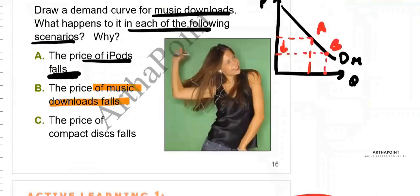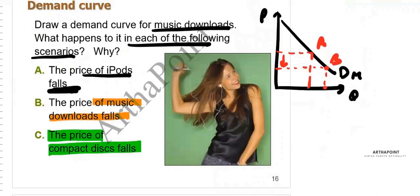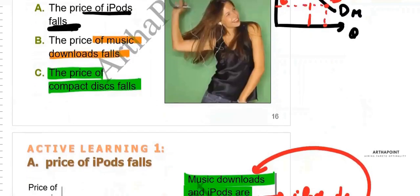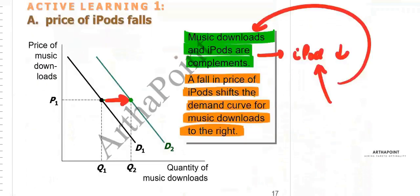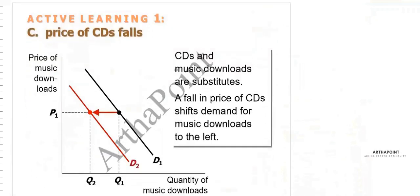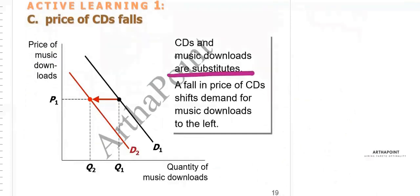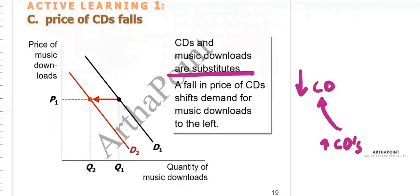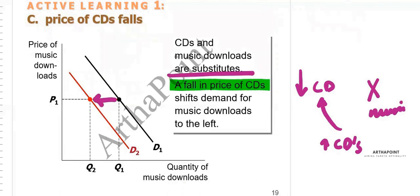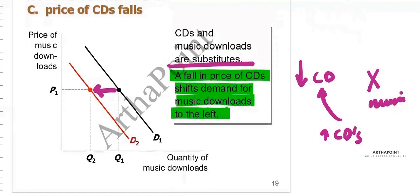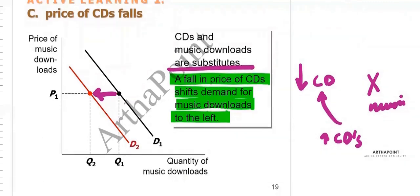Next: the price of compact discs falls. Compact discs and music downloads are substitutes — both can be used to listen to music. When the price of CDs falls, people will demand more CDs and will not do as many music downloads. So a fall in the price of CDs shifts the demand for music downloads to the left, reducing the demand for music downloads.